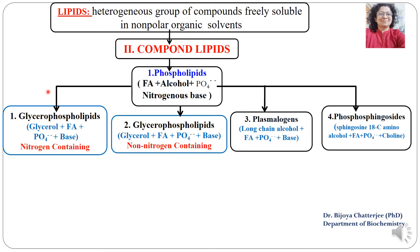The four categories are: first, glycerophospholipids, which contain glycerol as the alcohol, plus fatty acids, plus a phosphate group, plus a nitrogen-containing base. Second, glycerophospholipids that contain a non-nitrogen-containing base — the rest is similar to the nitrogen-containing glycerophospholipids. Third, plasmalogens, which are long-chain alcohols with fatty acid, phosphate group, and a base. Fourth, phosphosphingosides, which contain sphingosine — an 18-carbon amino alcohol — plus fatty acid, plus phosphate, plus choline.